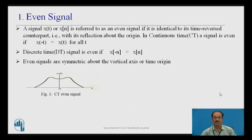Even signal: A signal x(t) or x(n) is referred to as an even signal if it is identical to its time-reversed counterpart, that is, with its reflection about the origin. In continuous time, a signal is even if it satisfies the condition x(-t) = x(t) for all t. Similarly, for a discrete time signal, it is even if it satisfies x(-n) = x(n). Even signals are symmetric about the vertical axis or time origin.